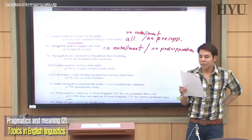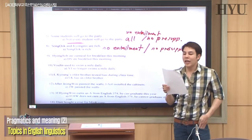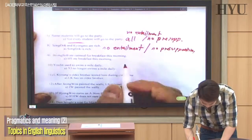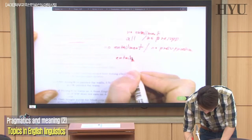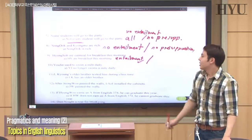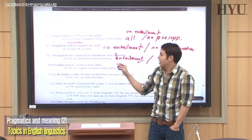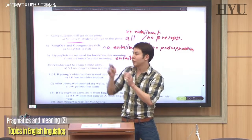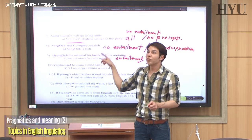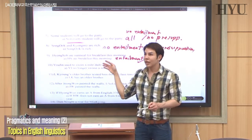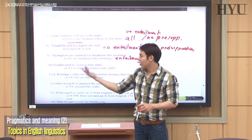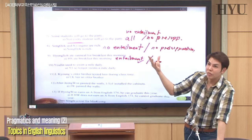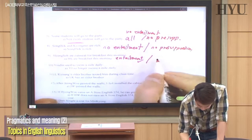Number nine: 'Hyeongsop ate oatmeal for breakfast this morning.' Does it entail he ate breakfast this morning? Yes — if he ate oatmeal for breakfast, he must have eaten breakfast. So entailment, yes. For presupposition: does someone saying this believe he ate breakfast? Yes. Even if you question it or negate it — 'Hyeongsop didn't eat oatmeal for breakfast; he ate fried egg' — he still ate breakfast. So presupposition too.